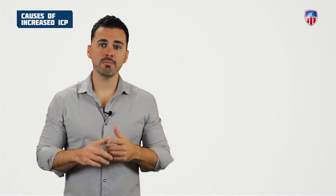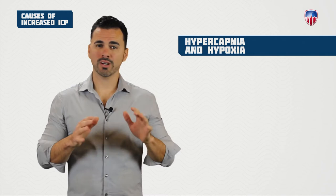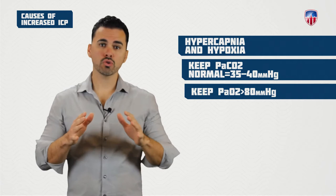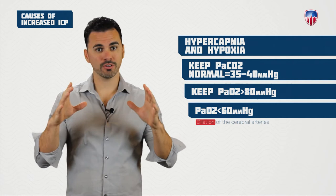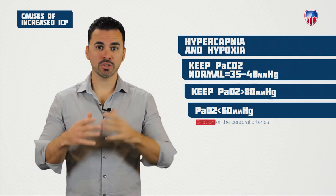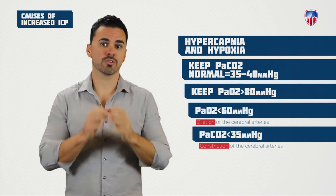When a patient sustains a brain injury with increased ICP, the goal is adequate blood flow. Primary causes of increased ICP include hypercapnia and hypoxia. Keep PaCO2 normal at 35 to 40 mmHg and PaO2 greater than 80 mmHg. If PaO2 falls below 60, it causes arterial dilation of cerebral arteries, increasing blood flow and ICP. Hypocapnia — PaCO2 less than 35 — causes arteriolar constriction, reducing blood flow and oxygen.